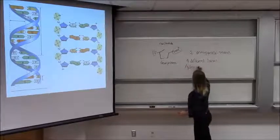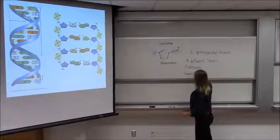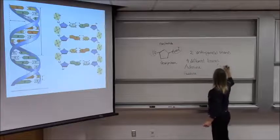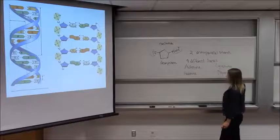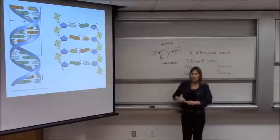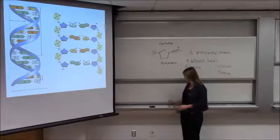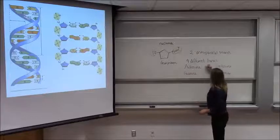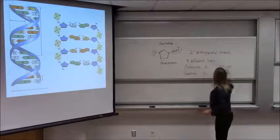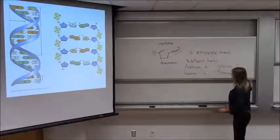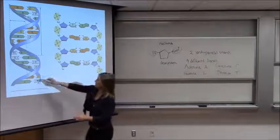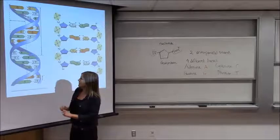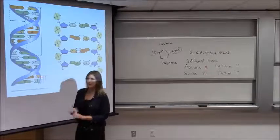The four different bases are adenine, guanine, cytosine, and thymine. We usually just represent those by their first letter: A, G, C, and T. And that's what you see in the more cartoon version — A, T, G, and C.